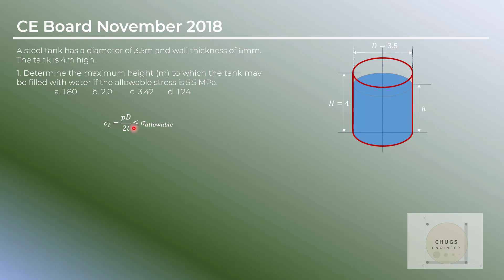Using the formula S = pd over 2t, the question asks for the height. Since pressure is not directly given in terms of height, we apply the formula: pressure equals the unit weight of water times the height. We substitute this into the tangential stress formula, so that what we are solving for is the height.